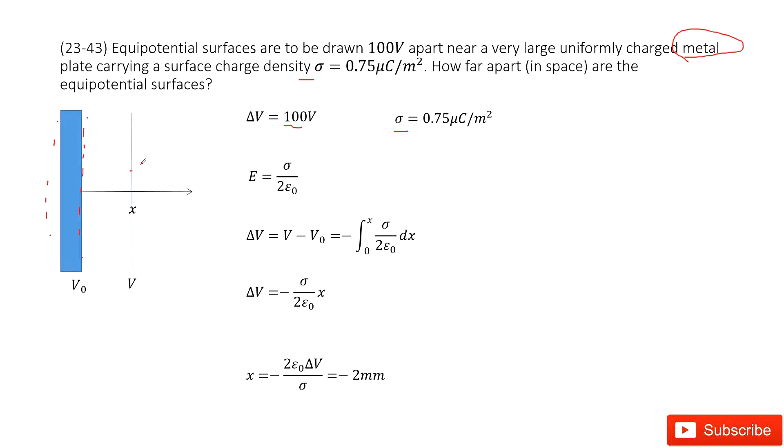So the electric field at this side, at the right-hand side, can be written with this equation. Now we can write the potential difference as V minus V₀ equals this function. Input the electric field, dx inside. And at V₀, the x is 0; at V, the x is x. Do this integral.